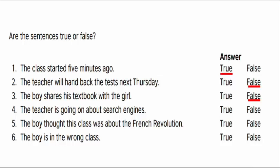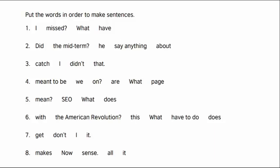Number four: the teacher is going on about search engines — is it right or wrong? Yes, that's right. Number five: the boy thought this class was about the French Revolution — who can answer? False. Why? Because the boy thought it was about the American Revolution, not the French one. Number six: the boy is in the wrong class. Yes, that's right. I will ask the students to be divided into groups for the next exercise and give them ten minutes, focusing on students who didn't participate in the first exercise.